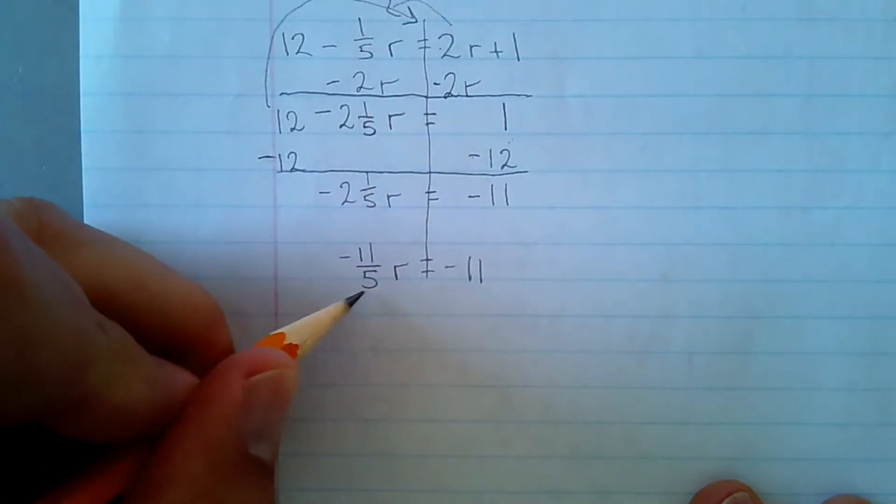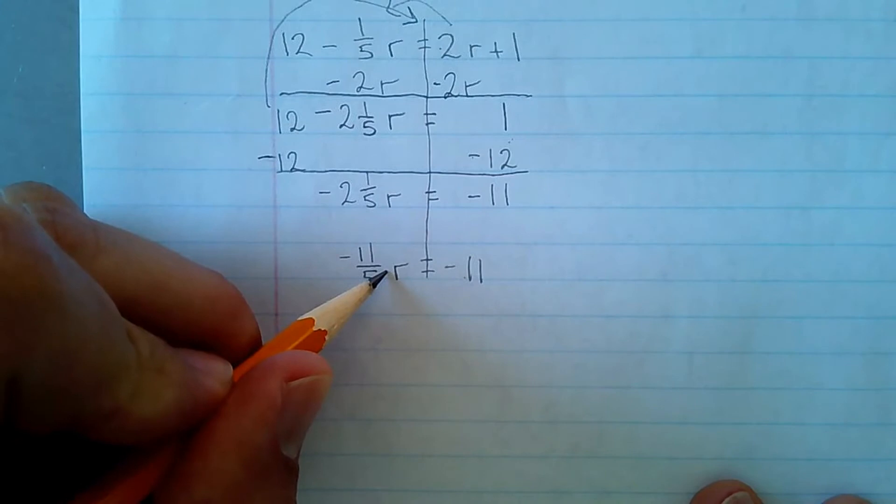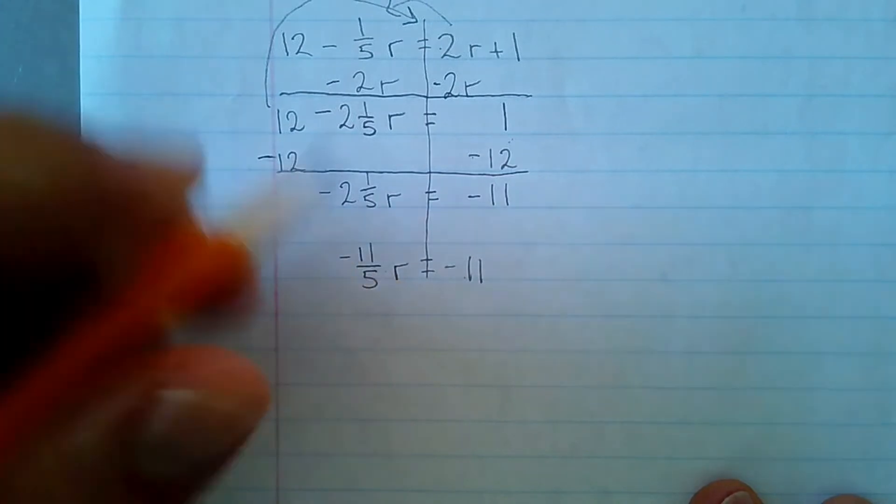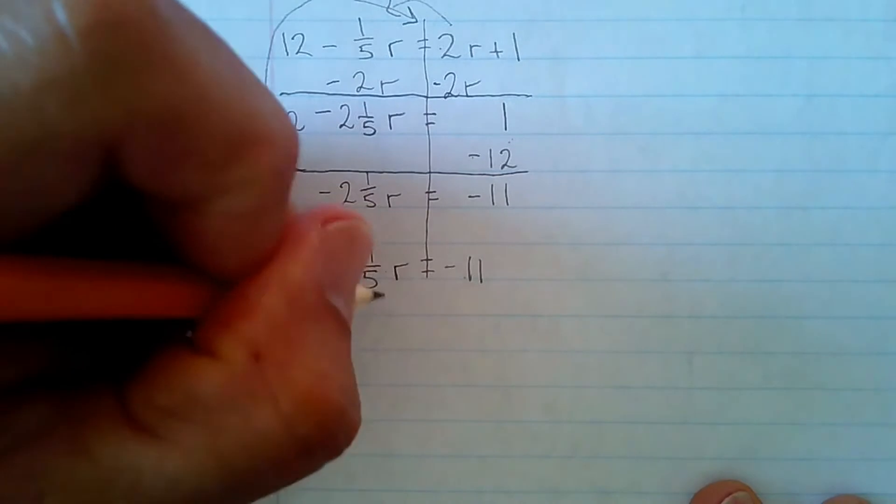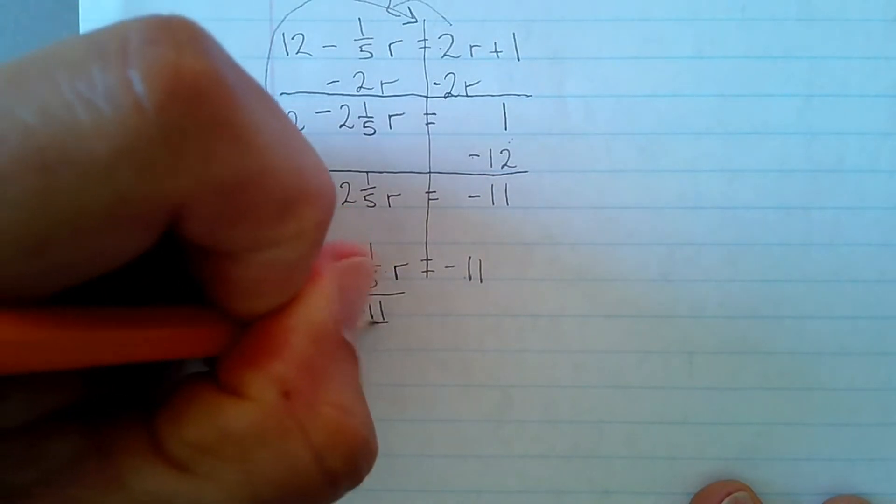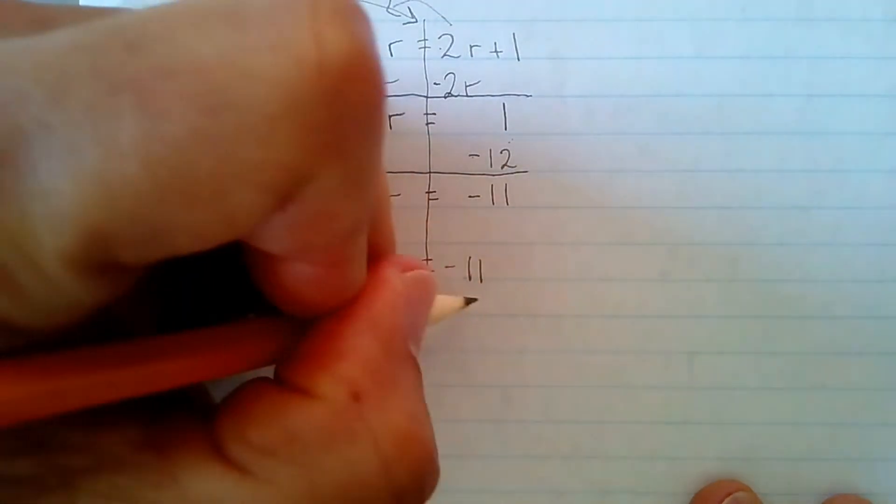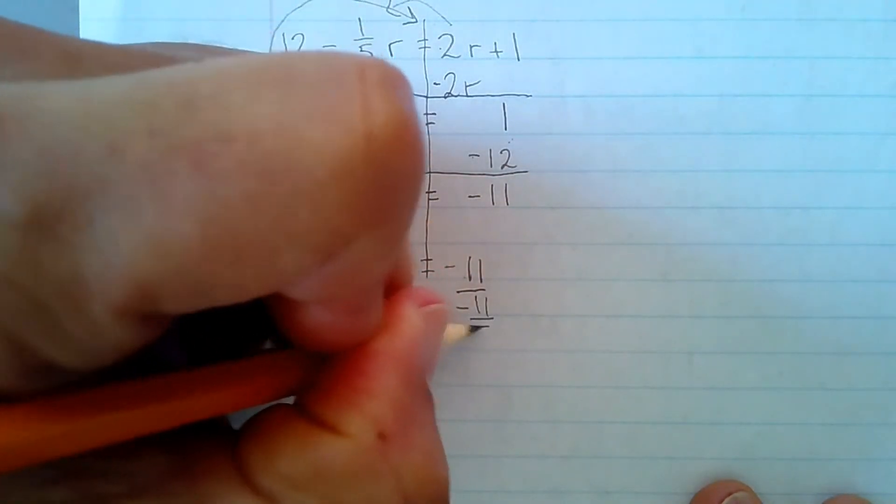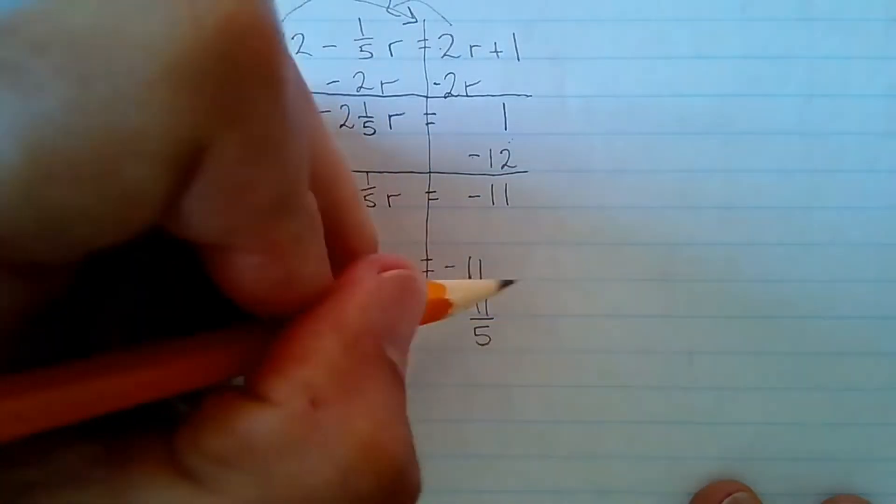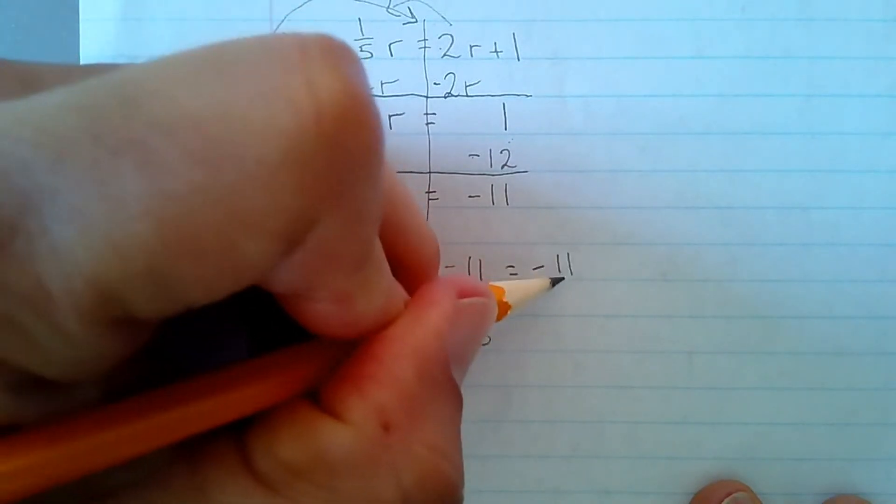And I'm going to divide by negative 11 fifths because I want this to go to the other side. Inverse of multiplying by negative 11 fifths is dividing. So when you divide, I guess maybe I'll just show that. Divide by negative 11 fifths and these cancel. So I have to divide this by negative 11 fifths. But this is the same thing as negative 11 over 1.